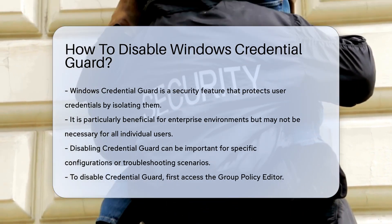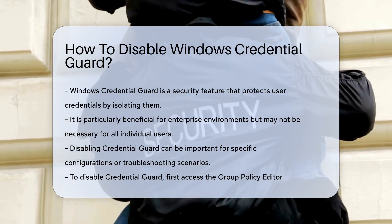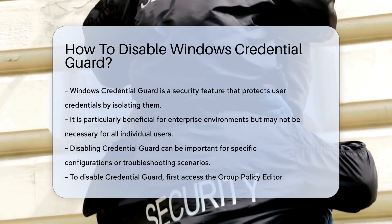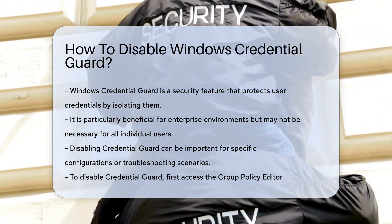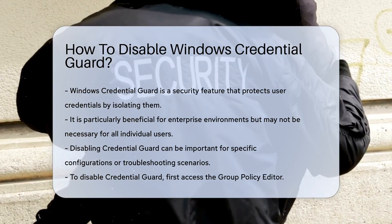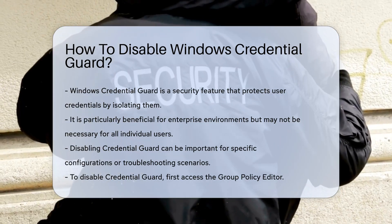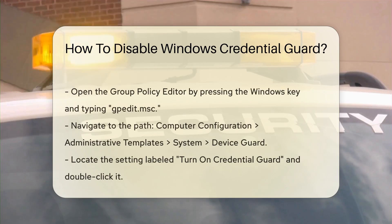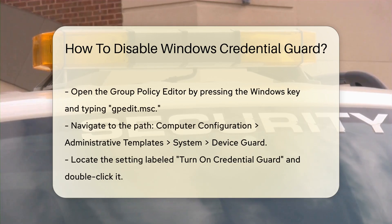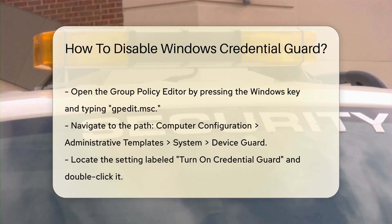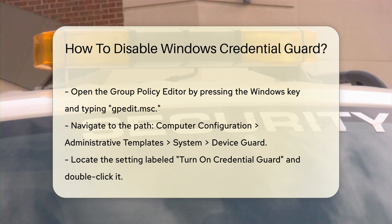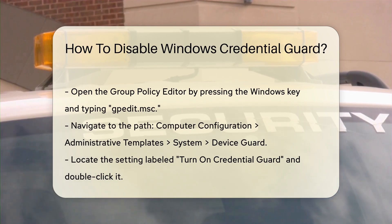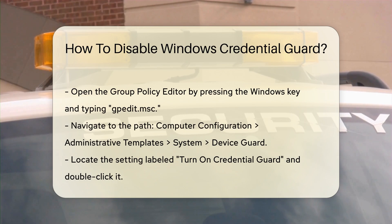To begin, access the Group Policy Editor. This tool allows you to modify system settings. Press the Windows key and type gpedit.msc to open it. Navigate to the following path: Computer Configuration, Administrative Templates, System, Device Guard.